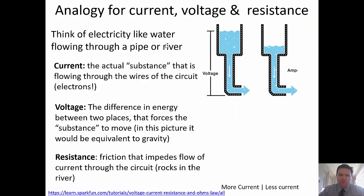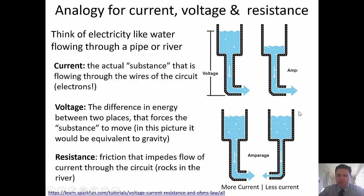Thinking about it like a pipe: in this picture on the left, we've got a large potential difference; on the right, not such a large one. In the next picture, both have the same potential difference, but one has a fat pipe — low resistance, lots of current flowing — and the other a skinny pipe — high resistance, impeding the flow.